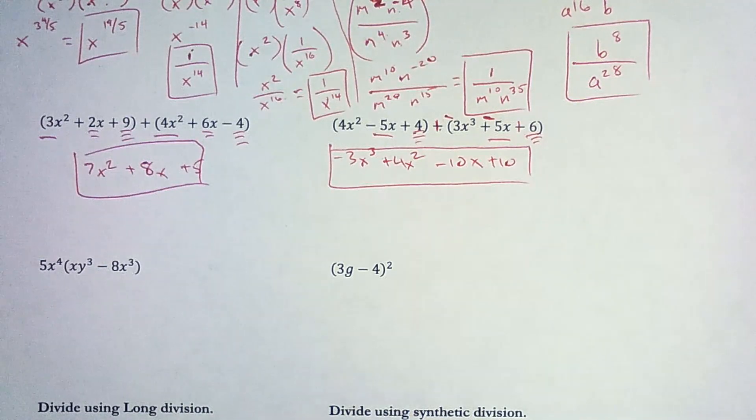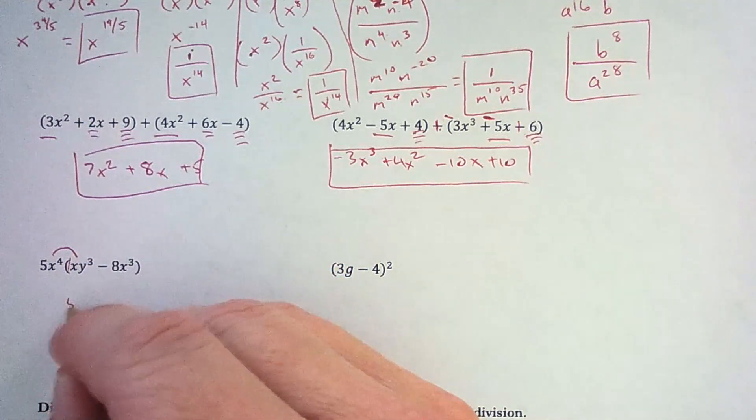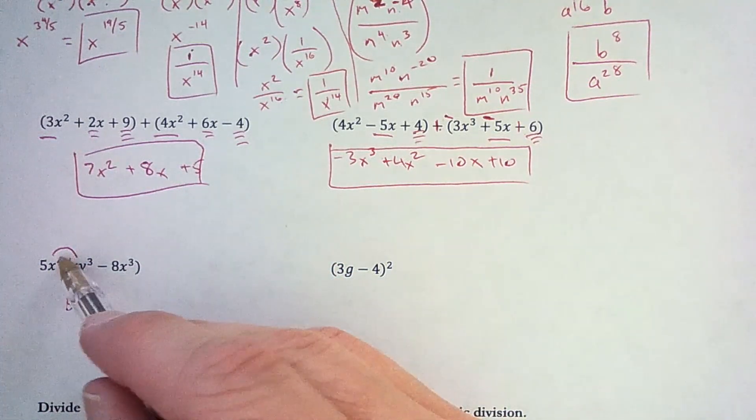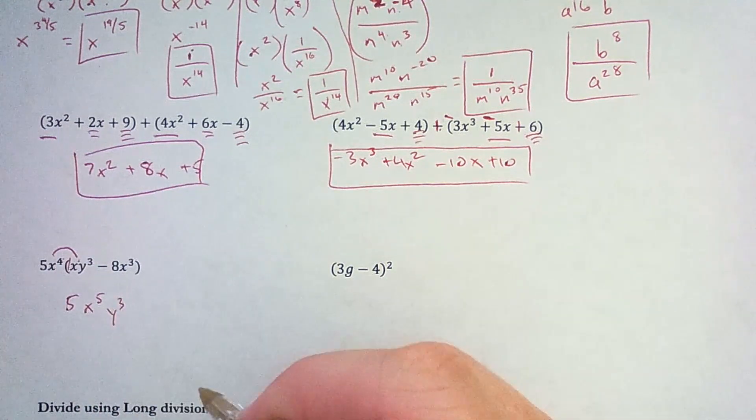And then I'm going to multiply. So I'll distribute here. So 5 times 1, that's 5. And then I add exponents. 4 plus 1 for the x's is 5. So x to the 5th, y cubed.